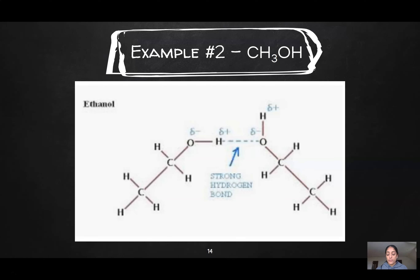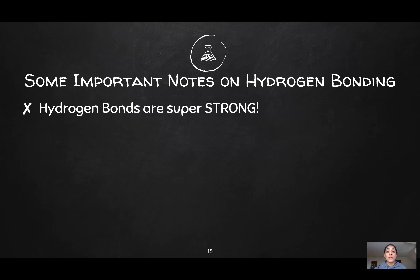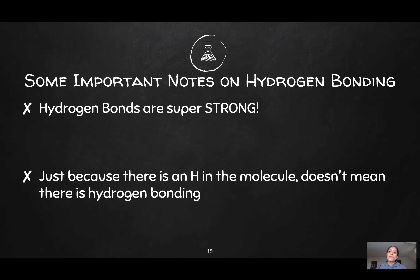Here is ethanol, CH3OH, and again the intermolecular attraction is highlighted — ethanol meets the criteria. We have a hydrogen attached to an O having an intermolecular attraction with an oxygen. So we have a strong hydrogen bond. It is important to remember that just because there's an H in a molecule doesn't mean there's automatically hydrogen bonding. For example, CH4 — the H is not bonded to an O, N, or F, so there is no hydrogen bonding there.